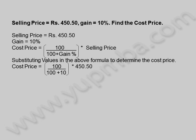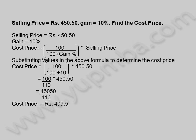Cost Price is equal to 100 divided by (100 plus 10) into 450.50, which is equal to 100 by 110 into 450.50, which is equal to 45,050 by 110.